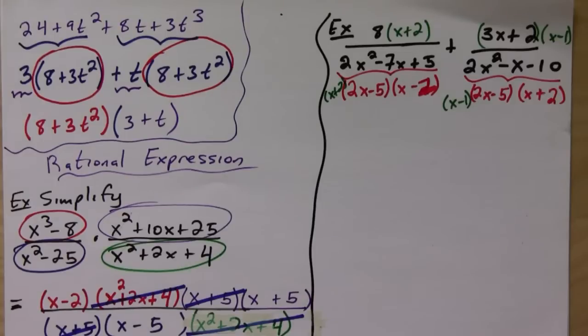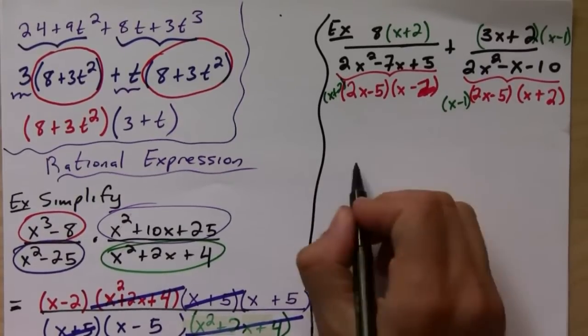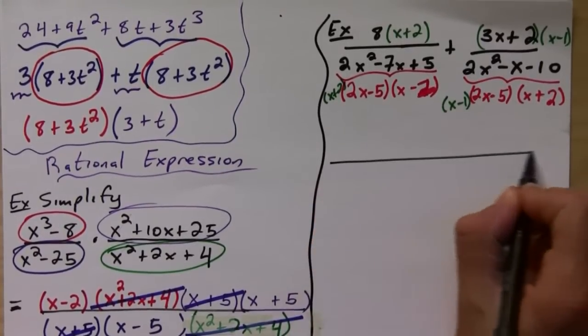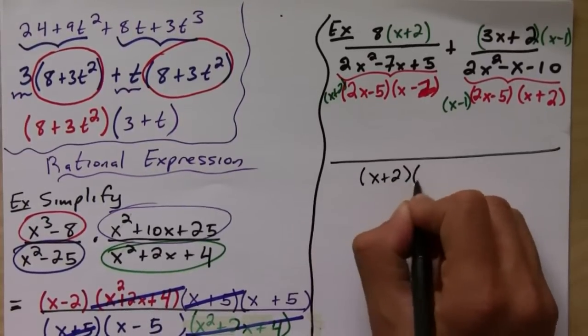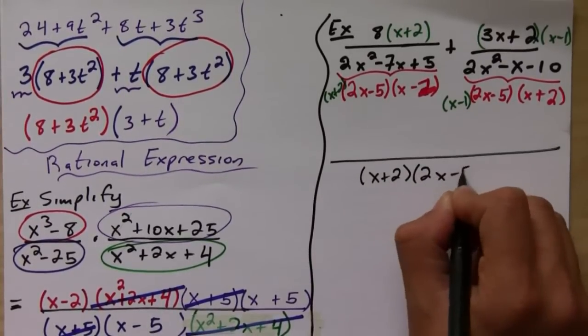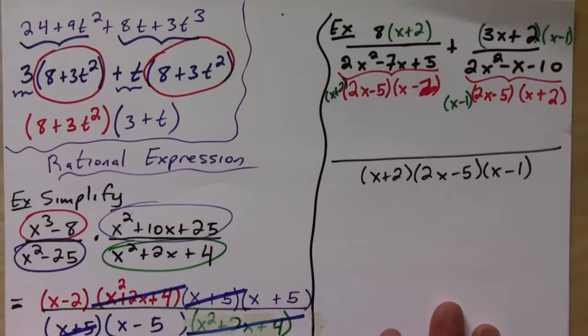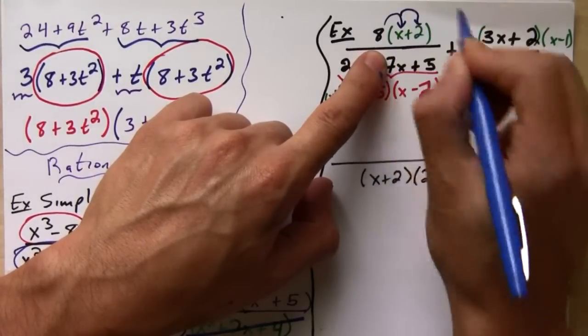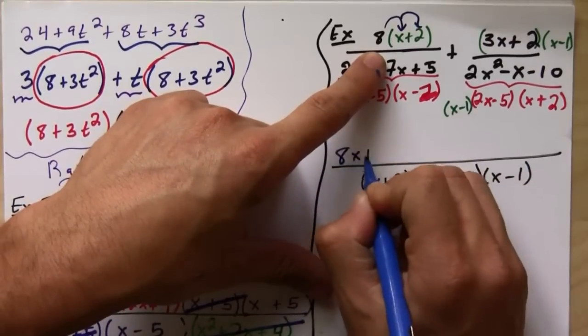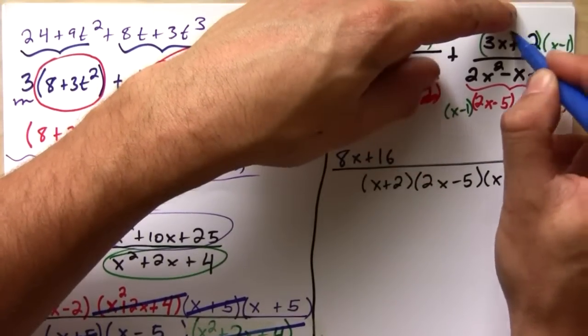Okay, so what we've got here is one big fraction now with the denominator going to be x plus 2, now this is the common denominator, times 2x minus 5 times x minus 1. And then we'll distribute this guy, so we'll get 8x plus 16, and this will foil this entire thing out.